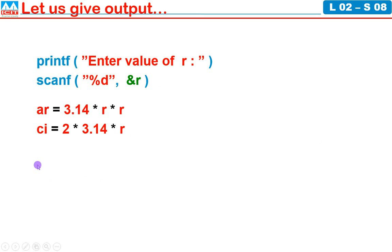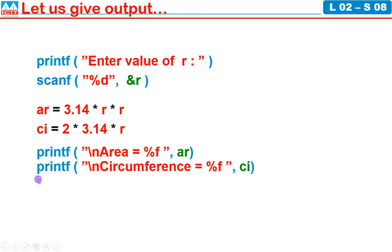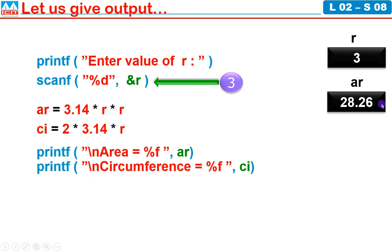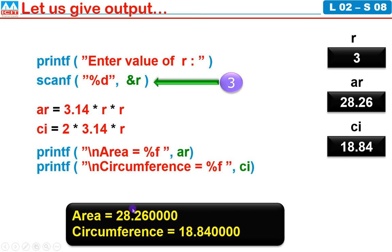Now we need to think about giving output. Let us give outputs using printf statement. Printf backslash n area equal to percentage f ar. Printf backslash n circumference equal to percentage f ci. At the time of execution, if I give value 3, that will be received into variable R. And ar value will be 28.26 and circumference value will be 18.84. By executing this printf I am going to get this output. Backslash n will move cursor to next line. Area equal to value will be displayed, then ar value will be substituted. Then backslash n new line. Circumference equal to will be displayed, then ci value will be displayed there. This is the concerned output.